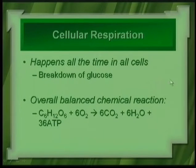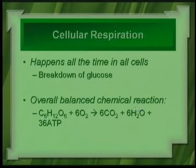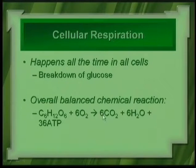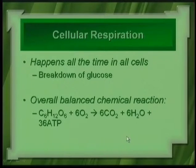It is a balanced chemical reaction: six carbons in, six carbons out; 12 hydrogens in, 12 hydrogens out (six times two); 18 oxygens on each side. So this overall balanced chemical reaction looks simple but is quite complex — just like photosynthesis.